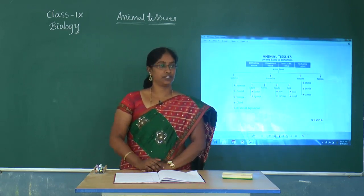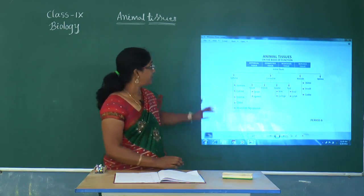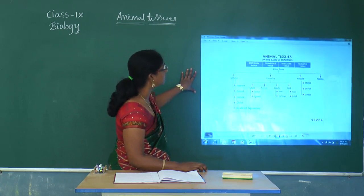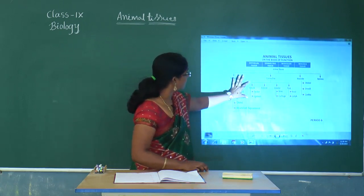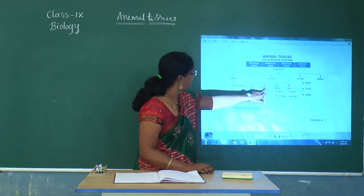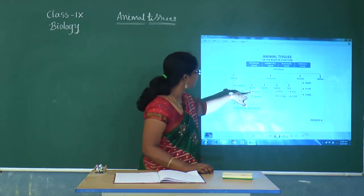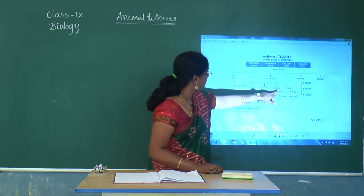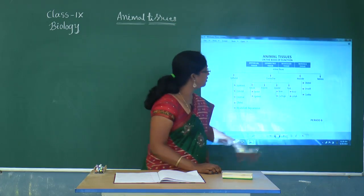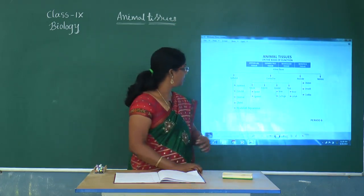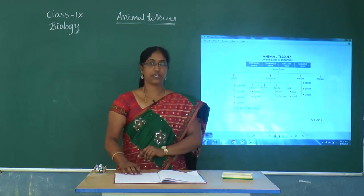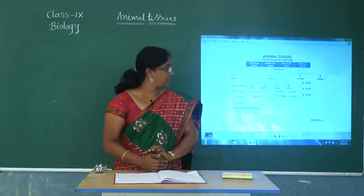The next one is connective tissue. Based on functions and locations, connective tissue is described as areolar tissue, adipose tissue, tendon, ligament, bone, cartilage, and blood. Blood and lymph are classified as fluid connective tissues. Let us have a look at connective tissue, starting with areolar tissue.